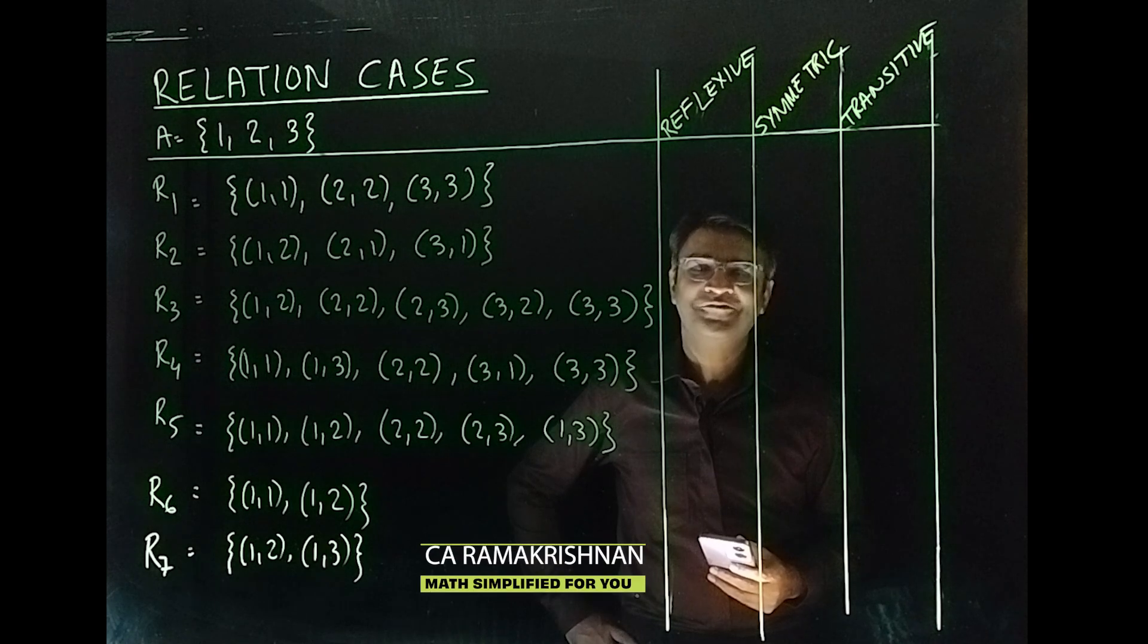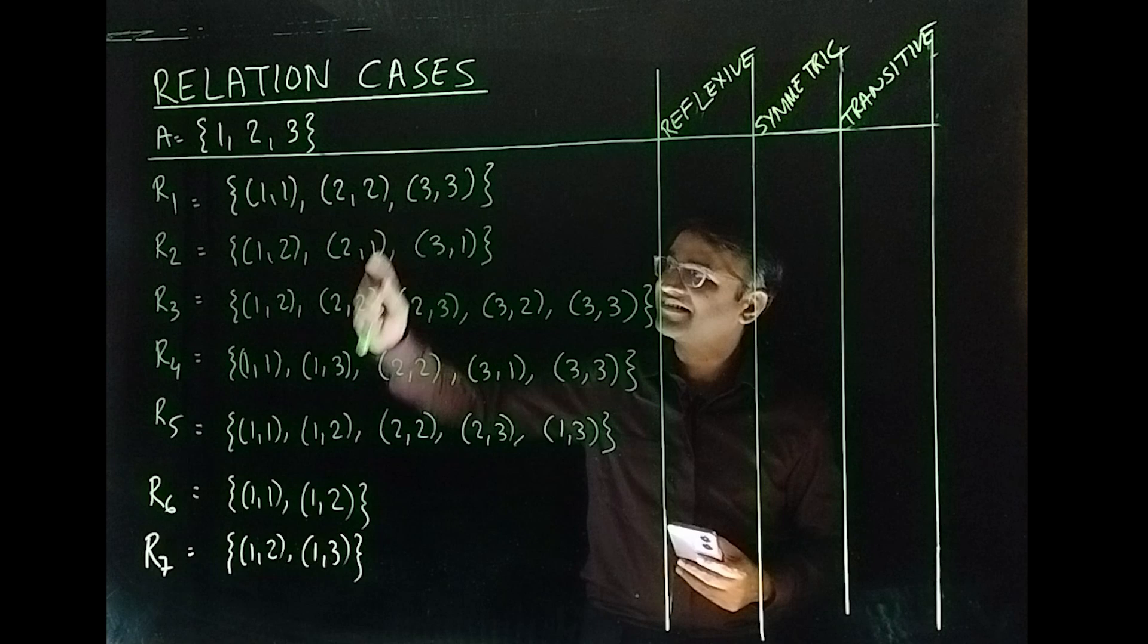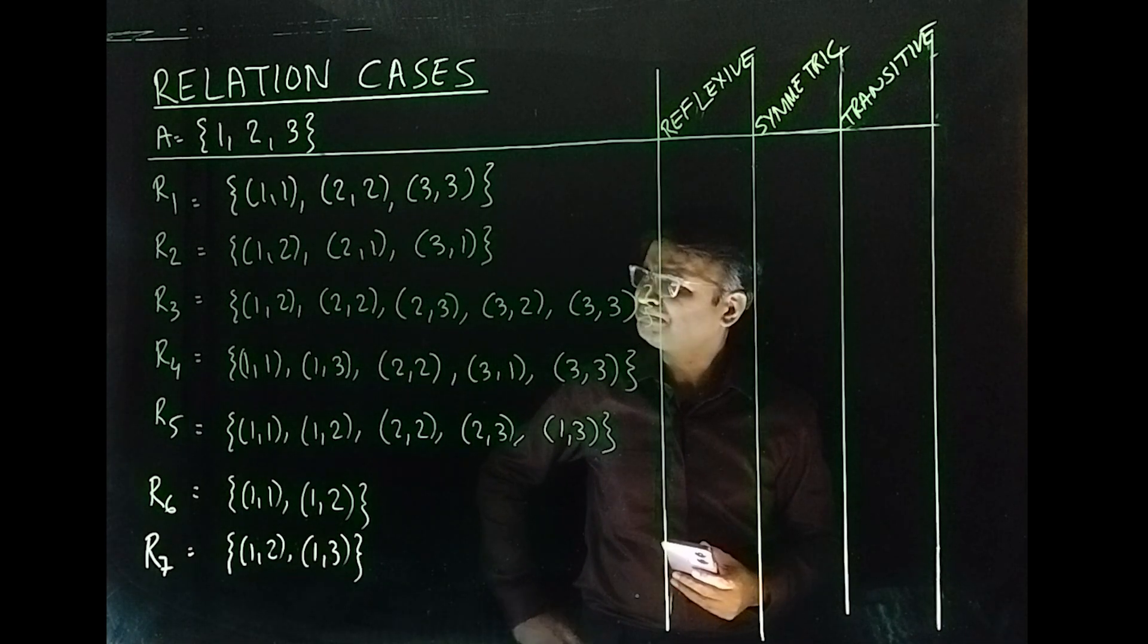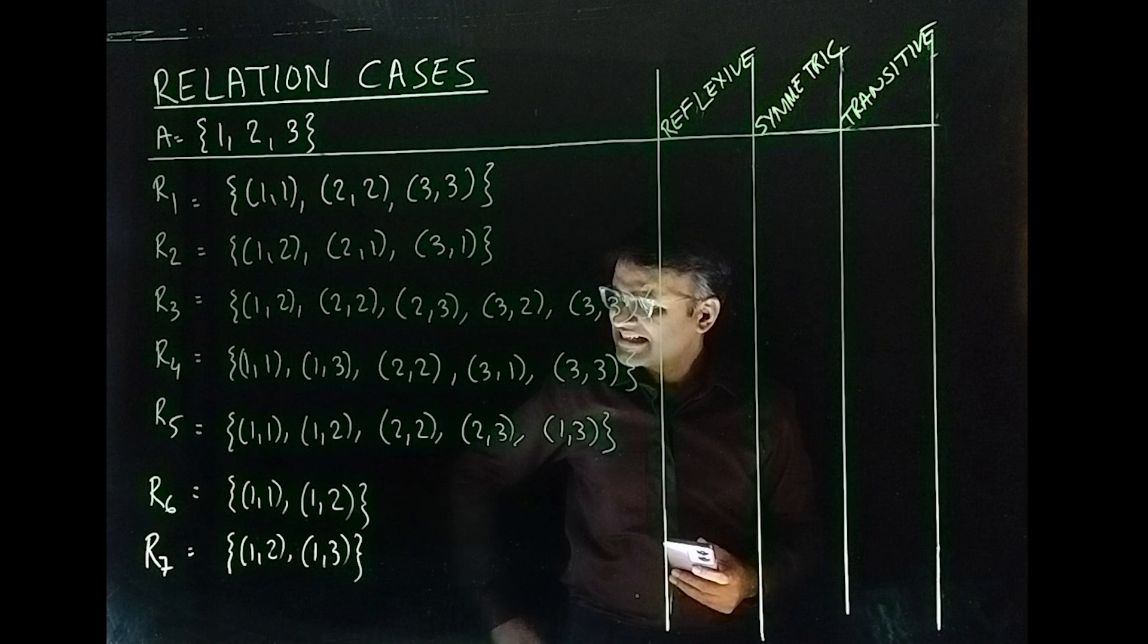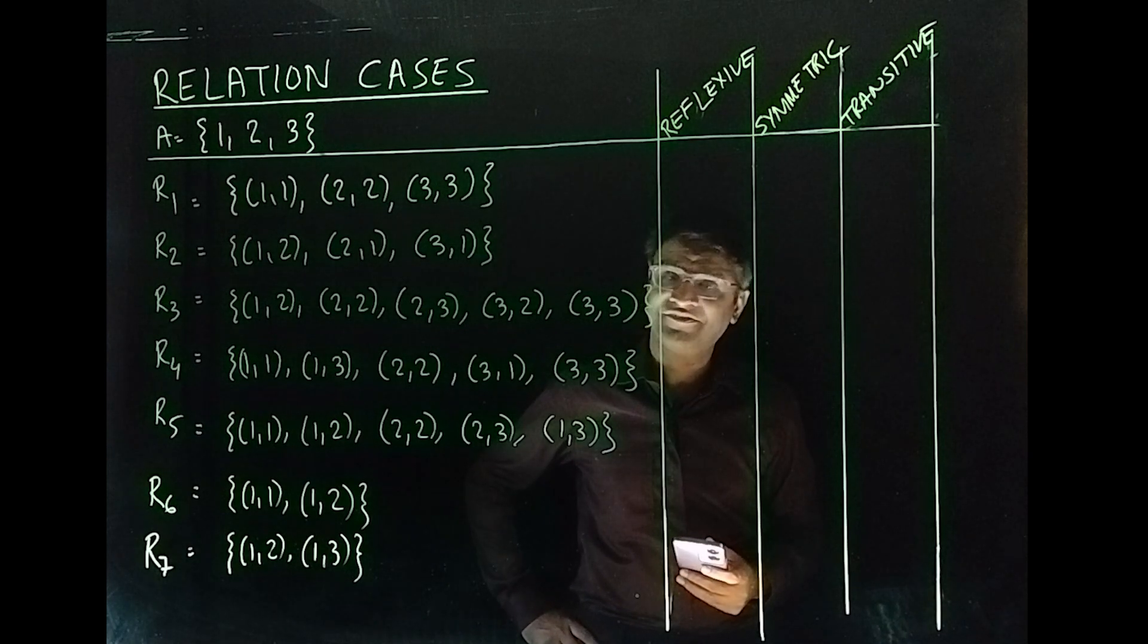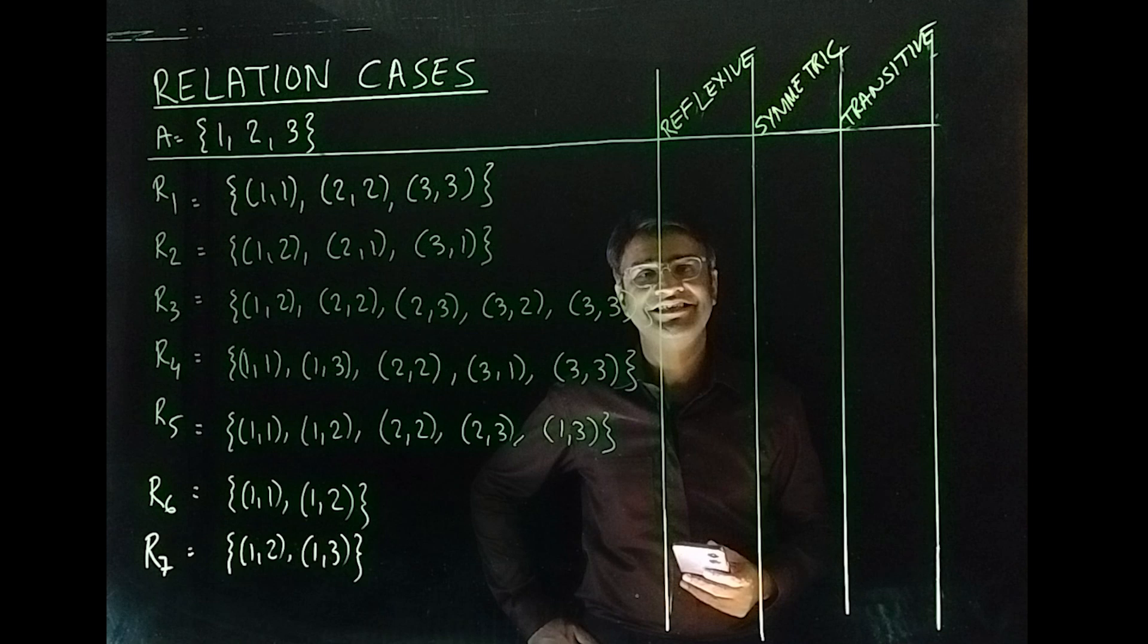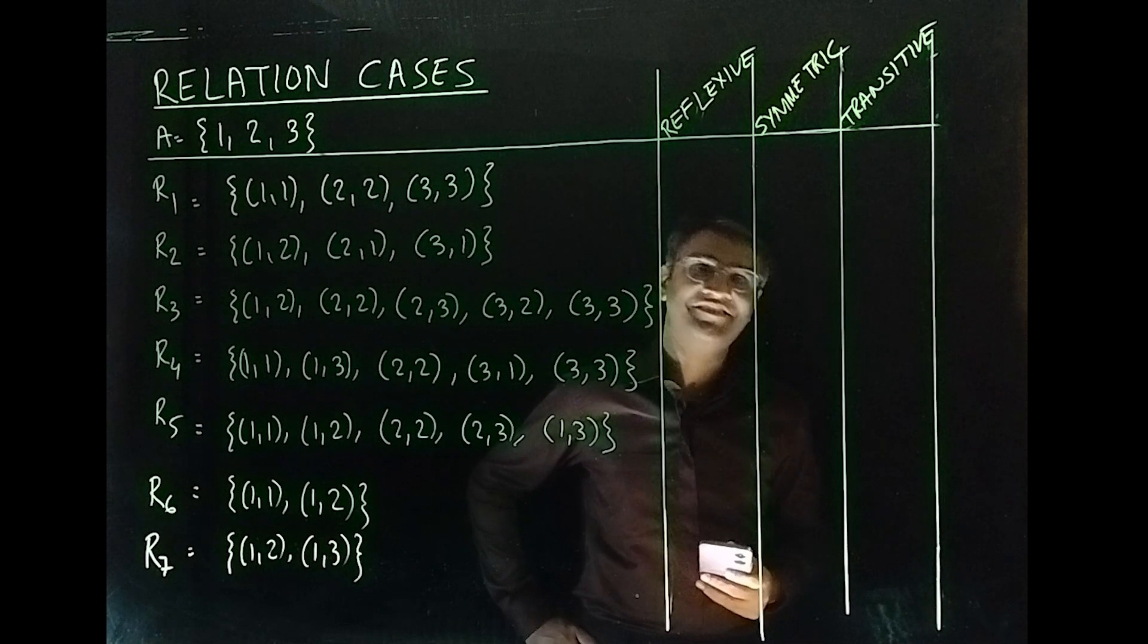Hello, my name is S.A. Ramakrishnan from Math Simplified for You, where we have taken a set A consisting of 1, 2 and 3. And I have listed 7 relations and we are going to check whether they are reflexive, symmetric or transitive or not.